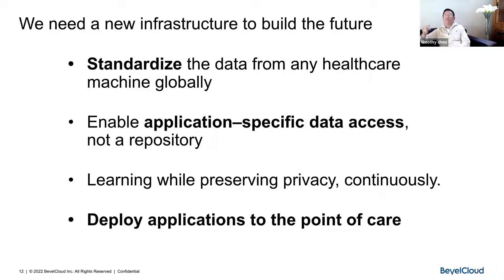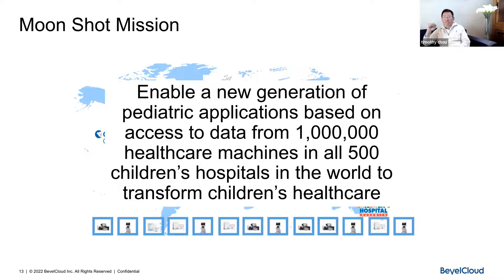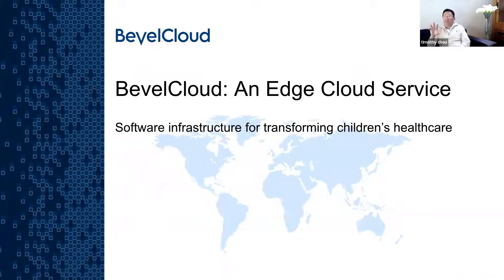This new infrastructure must standardize data from all healthcare machines globally; enable application-specific data access — not storing things for some vague future purpose, but for a specific application; learn while preserving privacy through federated learning; learn continuously rather than in batch mode; and deploy results to the point of care. Our moonshot mission is to enable a new generation of applications based on data from all 1,000 healthcare machines across all 500 children's hospitals in the world.